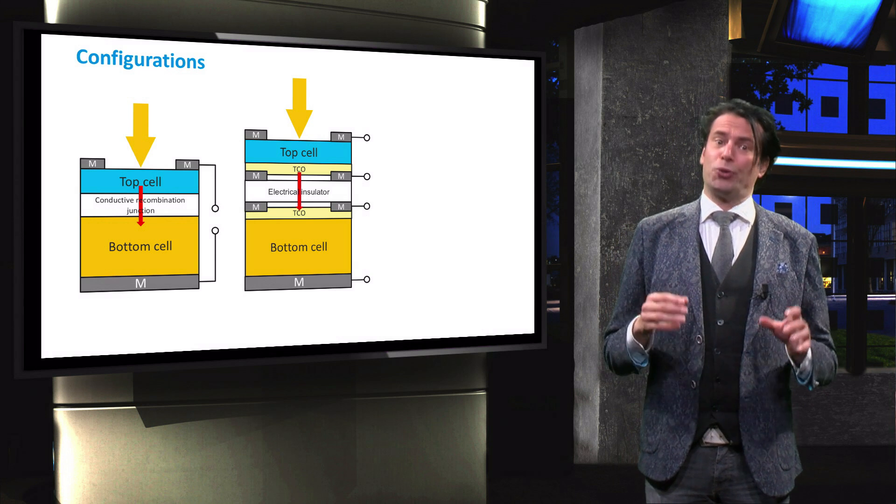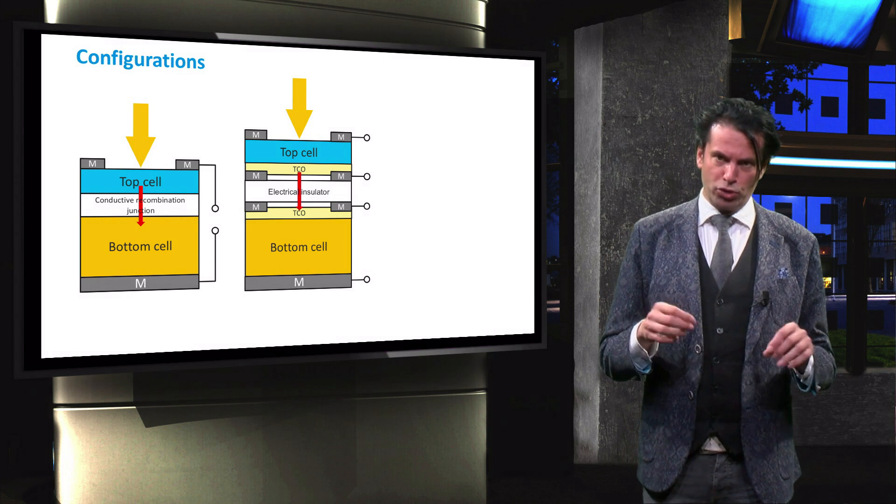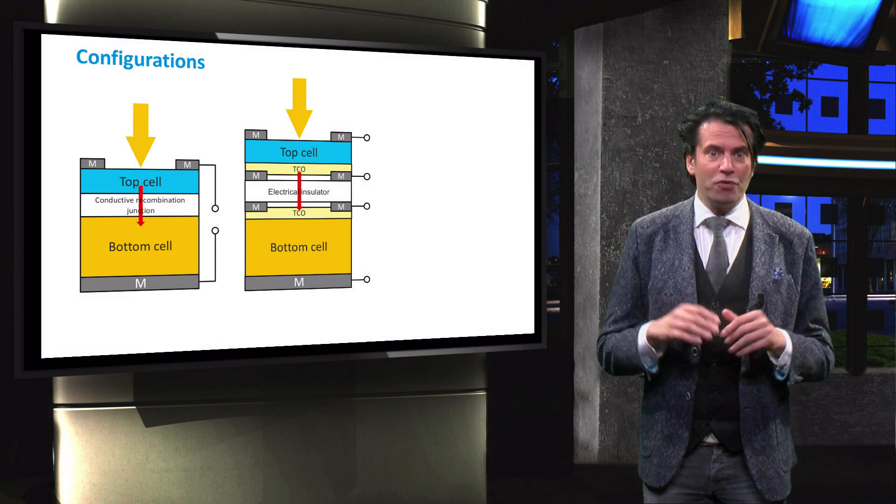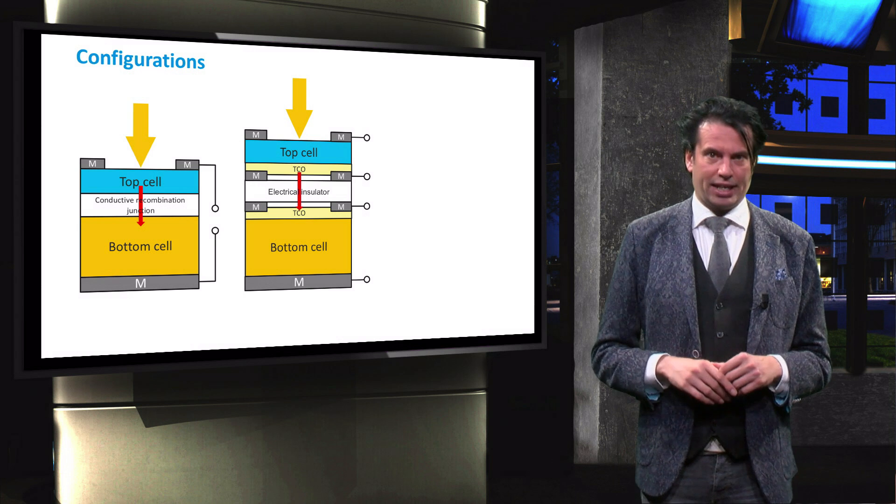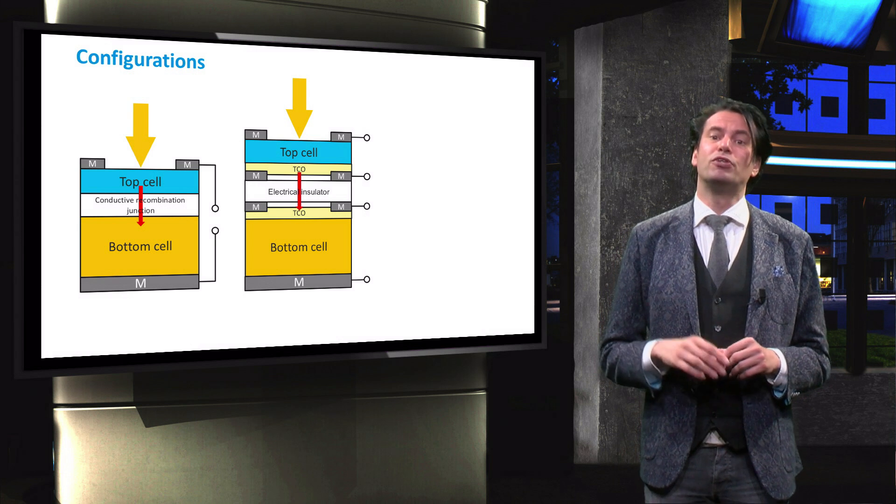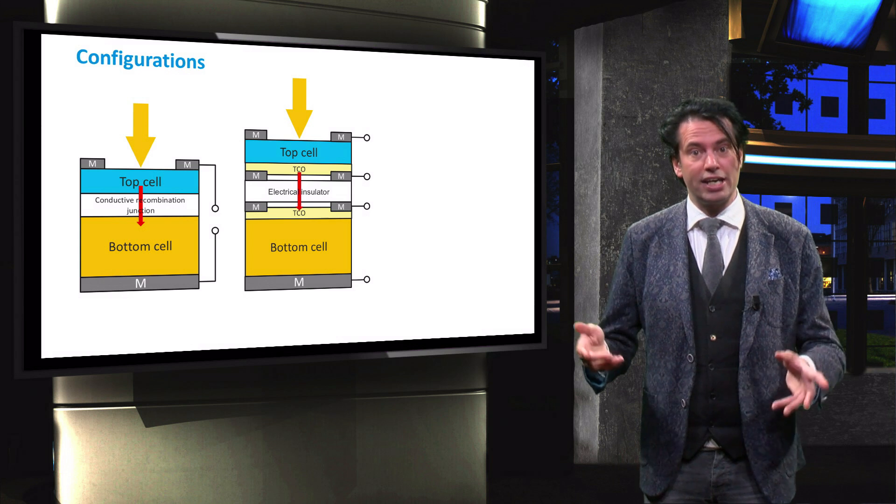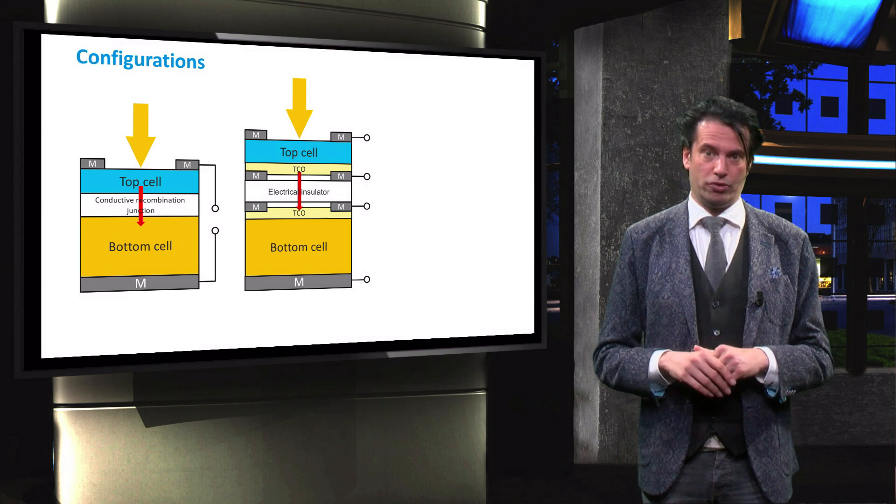There are two ways of connecting the individual processed top and bottom cell, via wafer bonding or by mechanical stacking. The wafer bonding technique results in two terminal device, while the mechanical stacking results in a four terminal device.